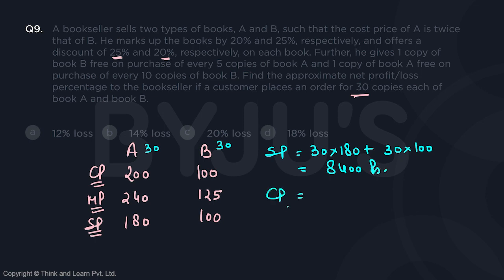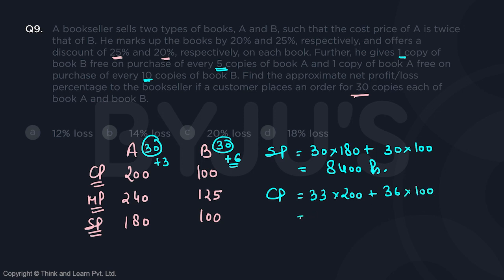But what is the cost to the shopkeeper? On 30 copies of A, the shopkeeper will give 6 copies free, because on every 5 he gives 1 free — so on 30 he gives 6 free. On 30 copies of B, he gives 3 free, because on every 10 he gives 1 free. So the total cost price for the shopkeeper is 33 copies of A at 200 rupees each, and 36 copies of B at 100 rupees each, making it 6600 plus 3600, which equals 10200 rupees.